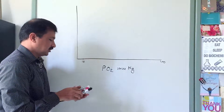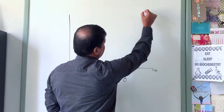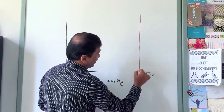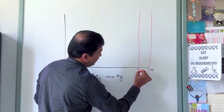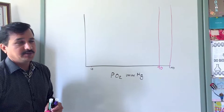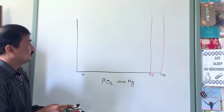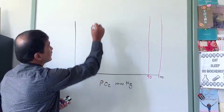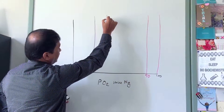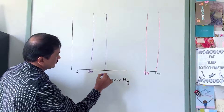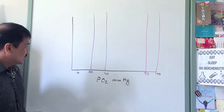I'll mark two tissue regions on the graph. The lungs have a partial pressure of oxygen between 90 to 100 millimeters of Hg, and the peripheral tissues have a partial pressure of oxygen ranging from 20 to 40 millimeters of Hg.